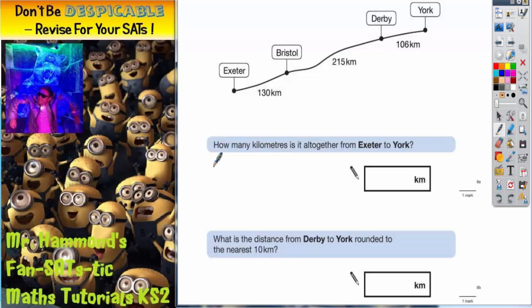So the first bit of the question is how many kilometres is it altogether from Exeter to York? Well Exeter to York is going to be including the 130, the 215 and the 106.